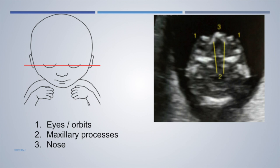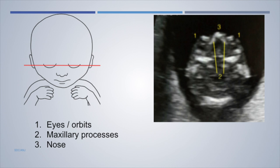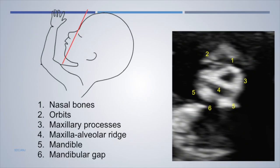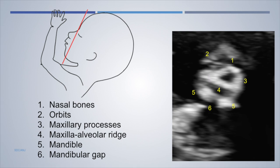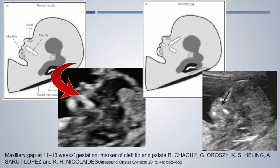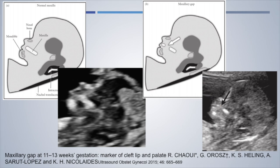From the head we come to the face. Here you see the eyes, orbits, maxillary process, and the tip of the nose. In the coronal section, you get the retronasal triangle — similar to the PMT in the 21-week scan — showing the nasal bone, orbits at the sides, maxillary processes, and the maxillo-alveolar ridge where a cleft palate would be seen, plus the mandible and mandibular gap. In the sagittal scan, the palate appears as an intact echogenic line; a break in this line on the lateral sagittal view indicates a cleft.